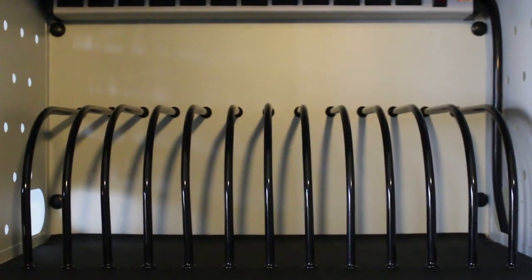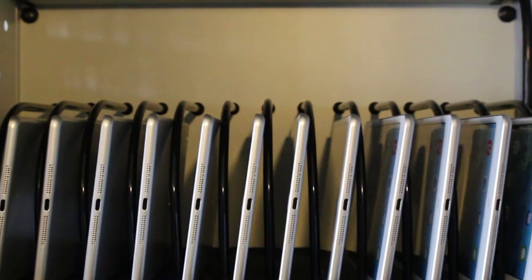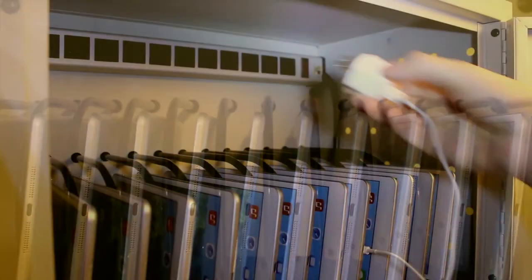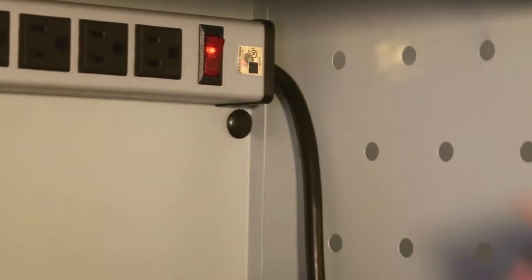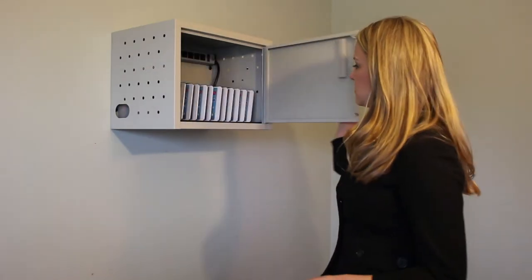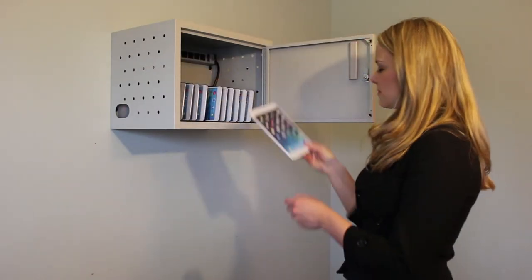Rubber-coated dividers spaced one inch apart keep your equipment organized and protected. Twelve electrical outlets keep the devices stored in the unit fully charged. The side panels are ventilated to allow air to circulate freely through the unit.